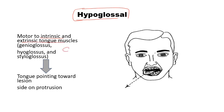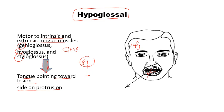The hypoglossal nerve supplies the intrinsic and extrinsic muscles of the tongue, including the genioglossus, hyoglossus, and styloglossus muscles. If damaged, the tongue will deviate towards the lesion side upon protrusion. For example, if the right side is damaged, the tongue will deviate to the right upon protrusion. With this, the lecture on cranial nerves comes to a conclusion.